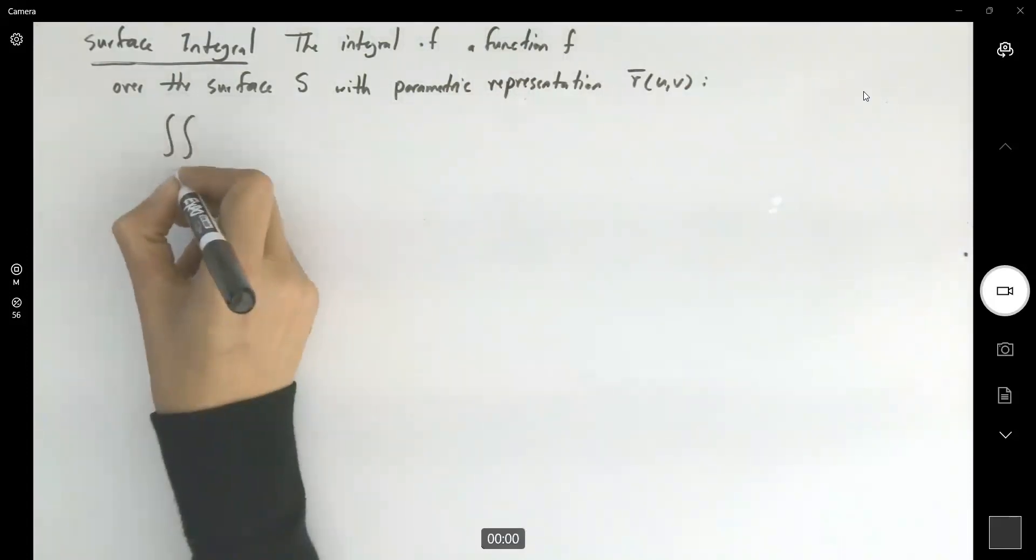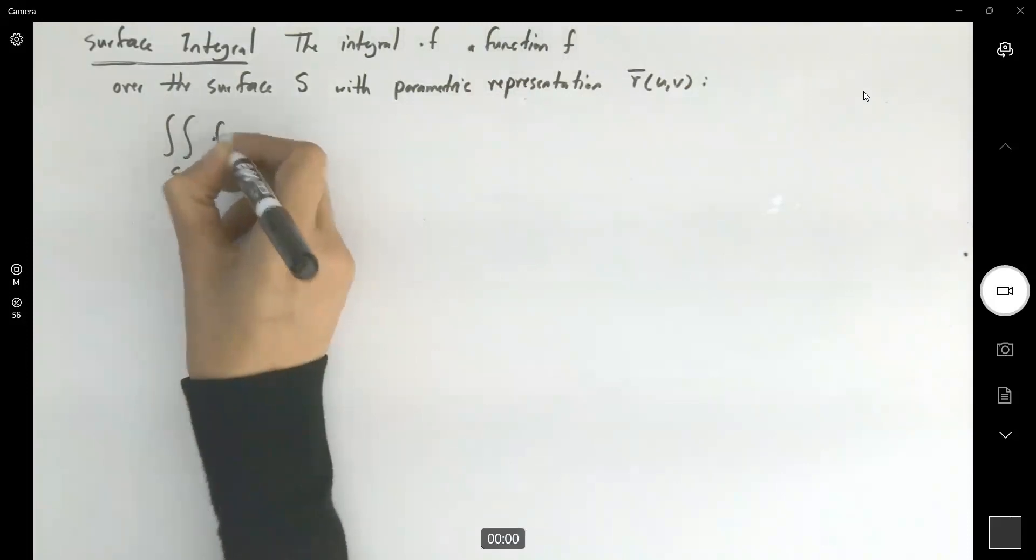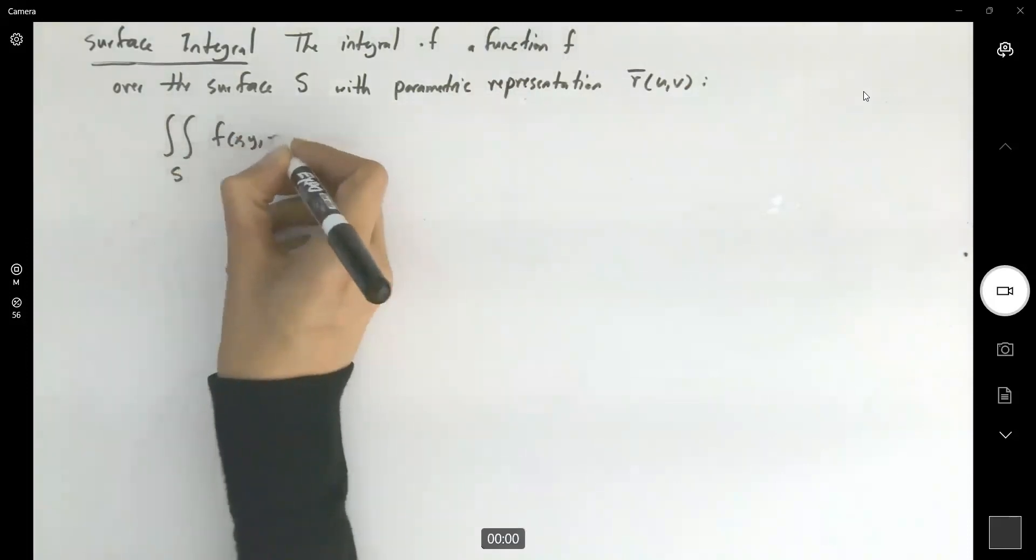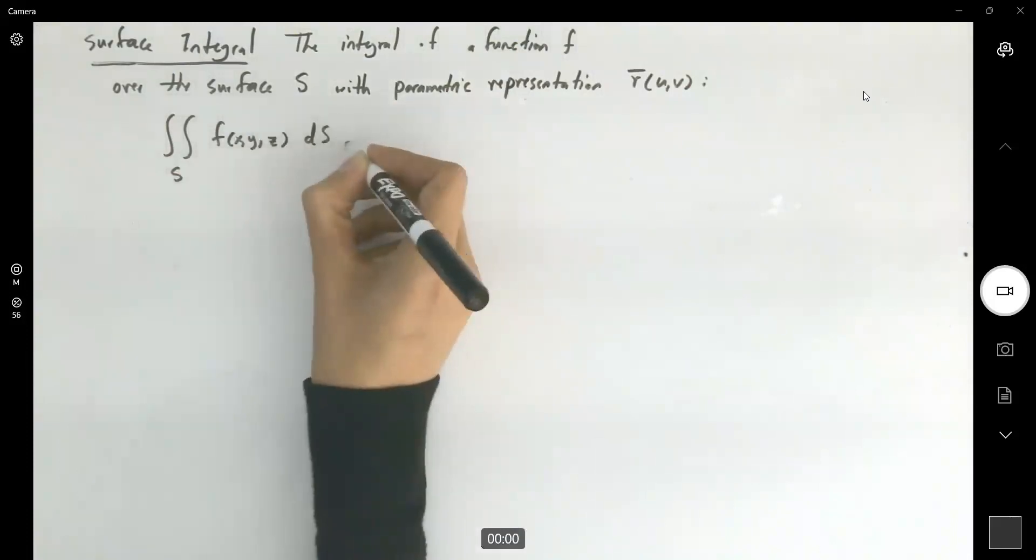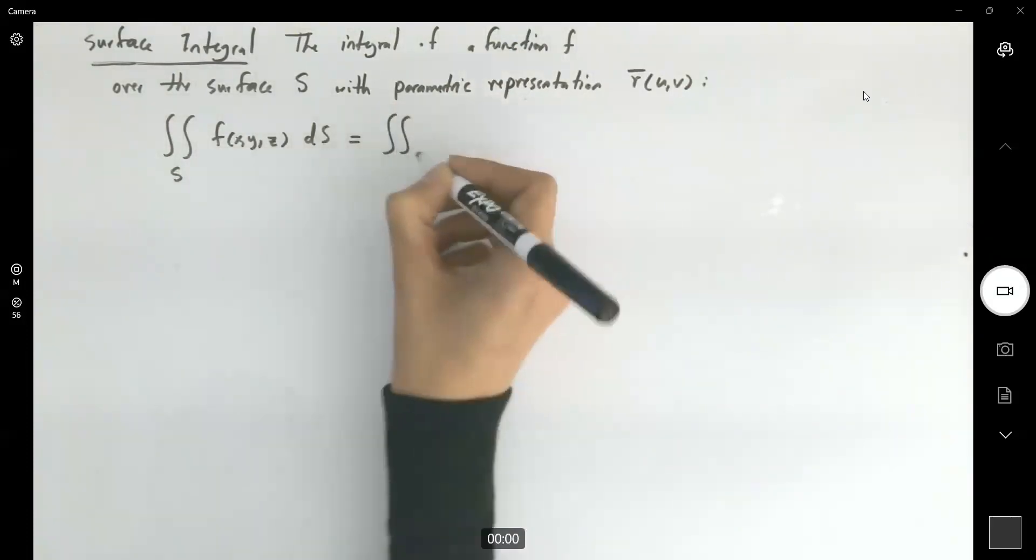It's the double integral over surface S of function f(x,y,z) dS. This can be written as the double integral over region D.